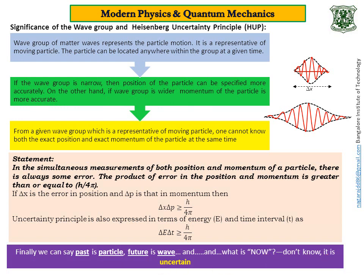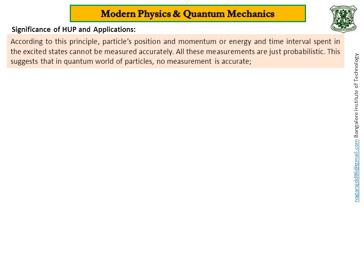In my previous slide I made one small mistake — I mentioned wavelength of the particle; it should be wavelength associated with the particle. Now, the significance and applications of the uncertainty principle: according to this principle, a particle's position and momentum, or energy and the time interval spent in the excited state, cannot be measured accurately. All measurements are just probabilistic. This suggests that in the quantum world of particles, no measurement is accurate.